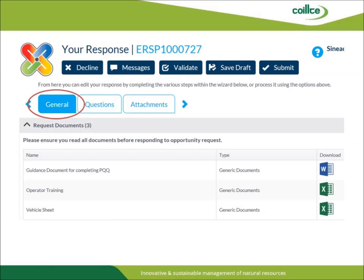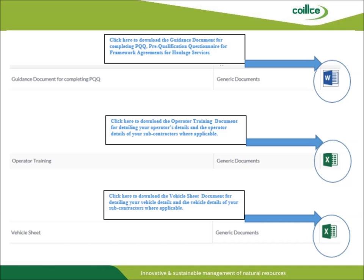These documents must be completed if you are to be considered for haulage tendering opportunities later this year. Each of these documents must be downloaded to your computer. The guidance document must be reviewed so that you understand the requirements of this PQQ. The Operator Training and Vehicle Sheet are two spreadsheets that must be populated with the details of the operators and vehicles that you intend to use. Don't forget to list the details of your subcontractors on these spreadsheets if you intend to use any for a prospective tender.